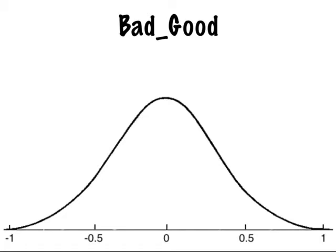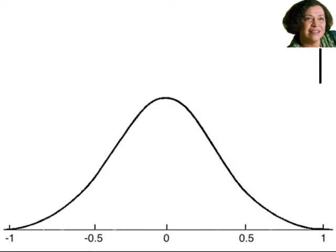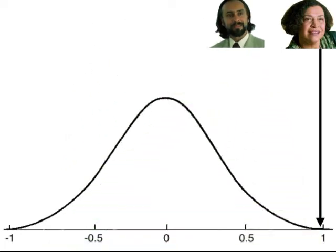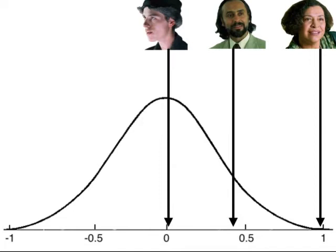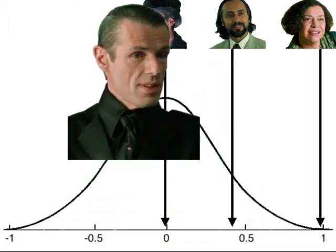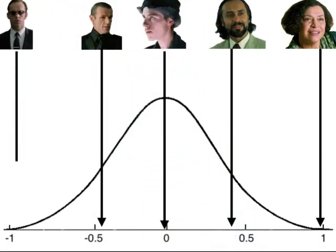Let's take some characters from the Matrix film trilogy as examples. The Oracle is definitely a very good person, so I'm going to put her just below plus one on the scale. Next comes Rama, the exiled program — he's a nice enough guy, at plus 0.4. Mouse is right around zero — not bad, but not especially good either. The Merovingian is definitely a bad guy but has a certain charm, so minus 0.5. And Agent Smith is the baddest of the bad guys, at minus 0.99.